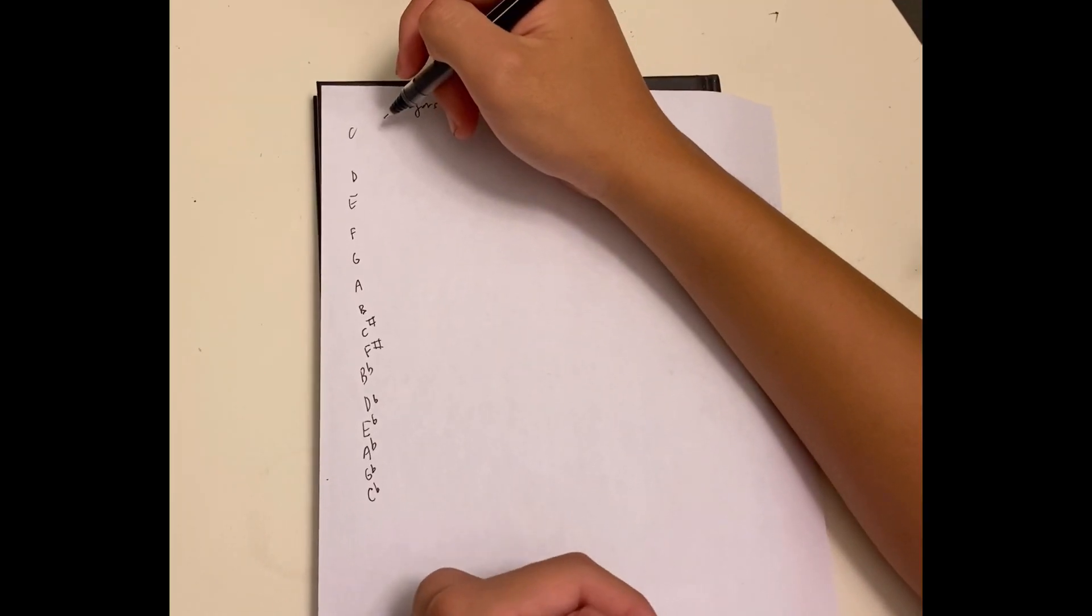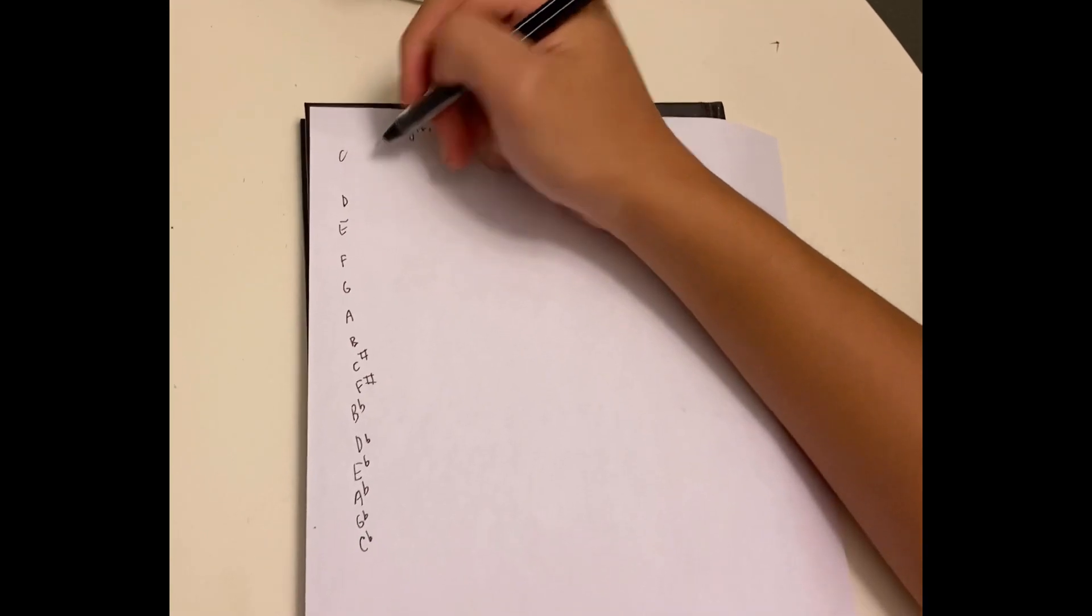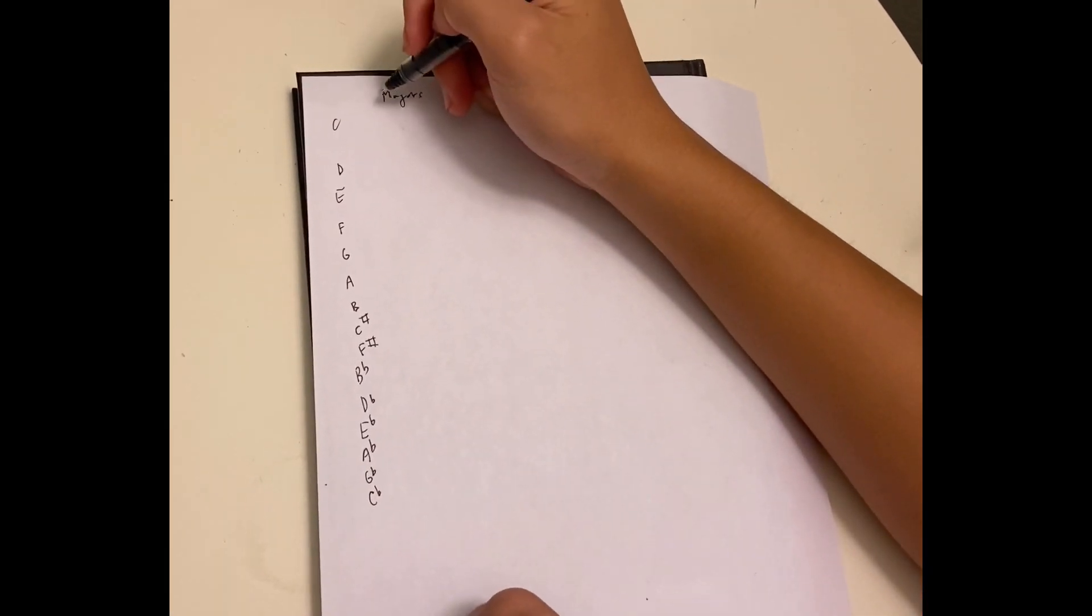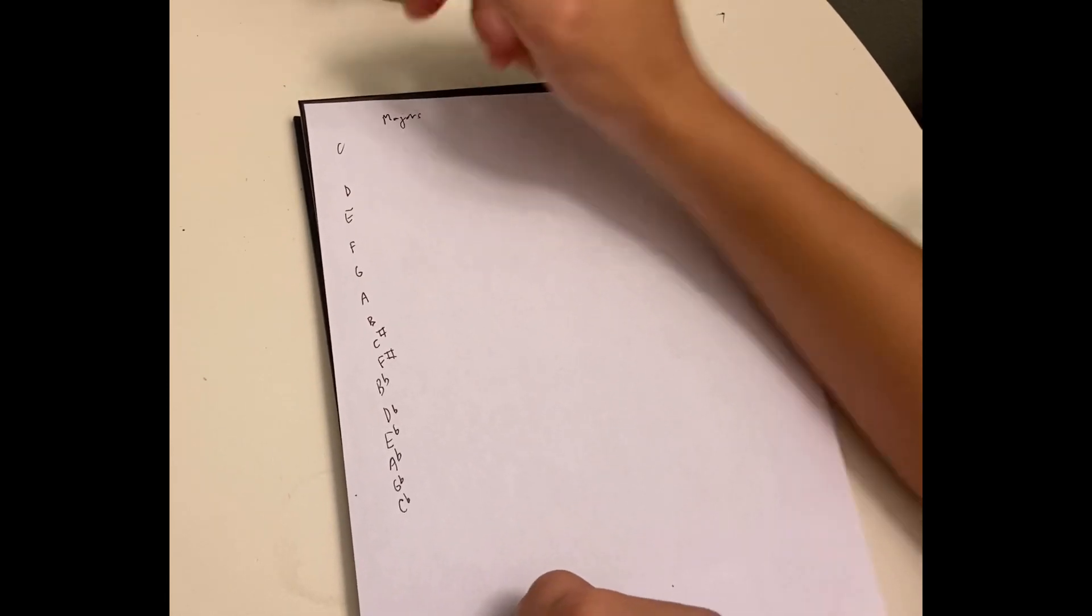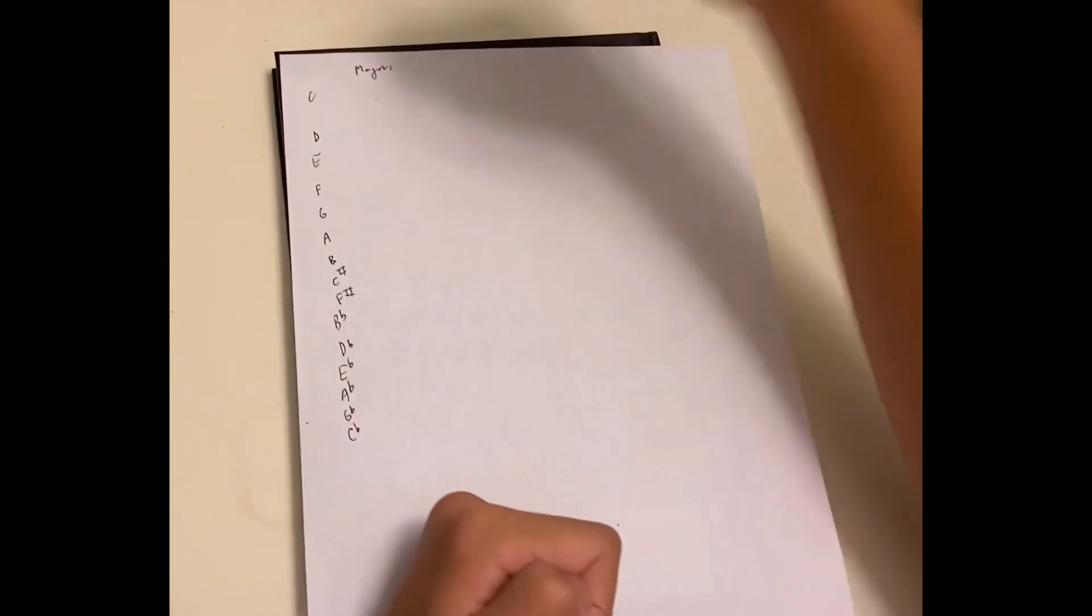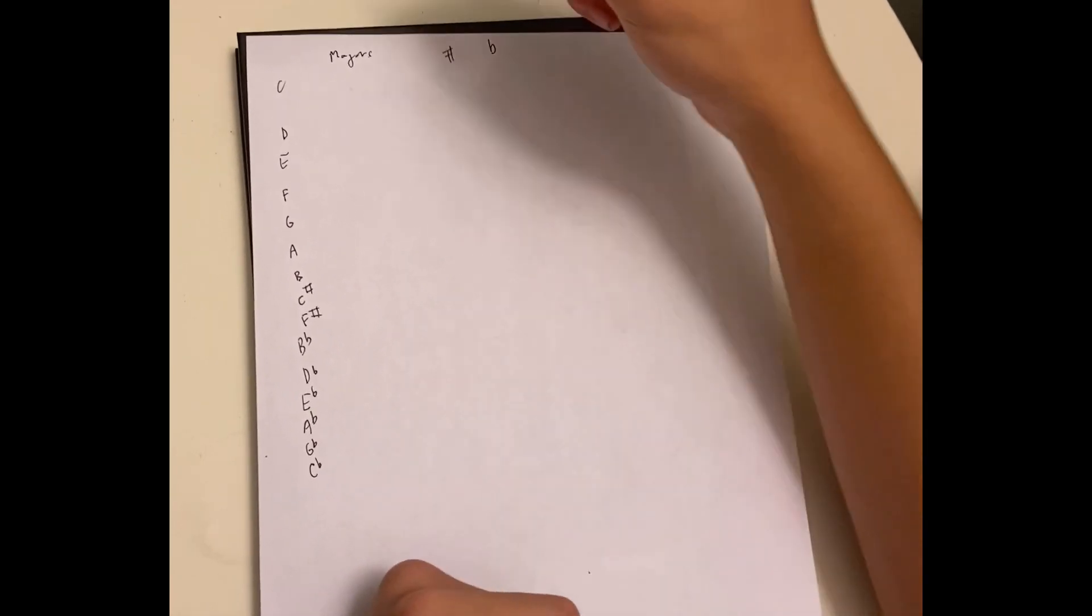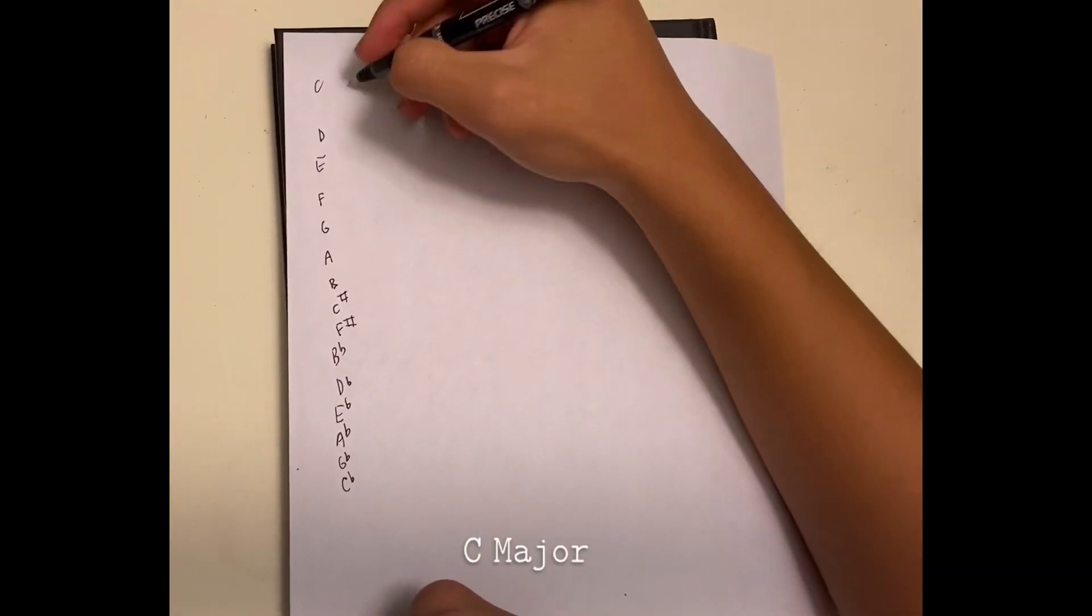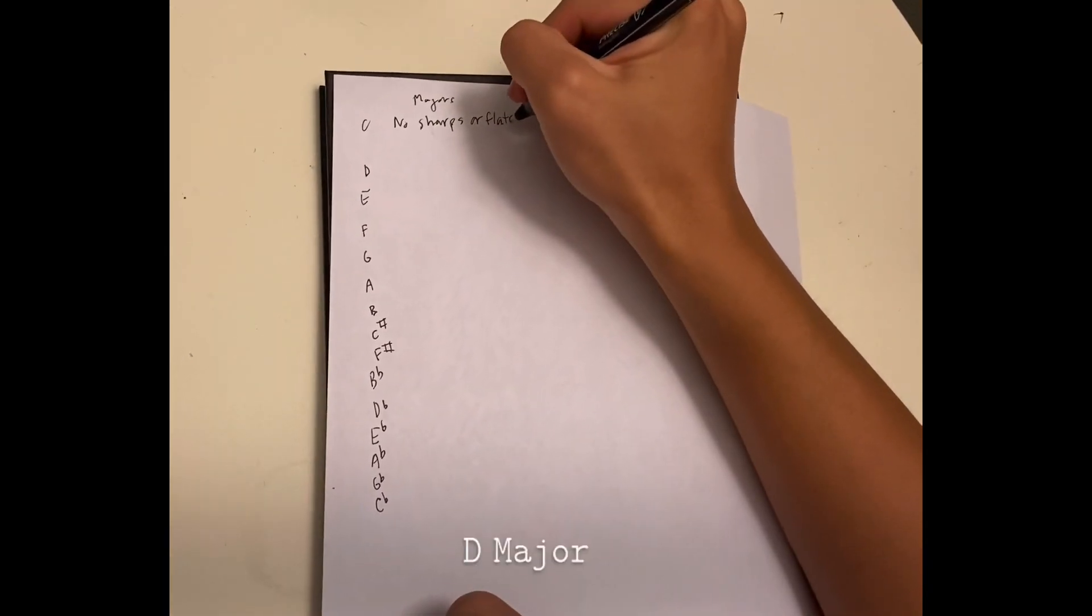Today we're going to be going over majors. There are a lot of majors in music theory. The basic one is C major, no sharps or flats. And by the way, if you don't know what a sharp is, this is a sharp sign and this is a flat sign.